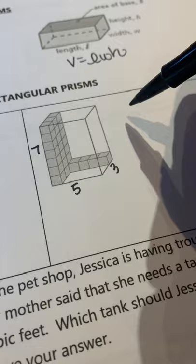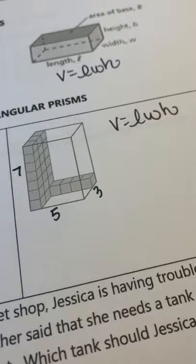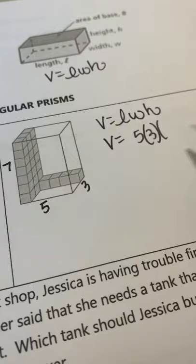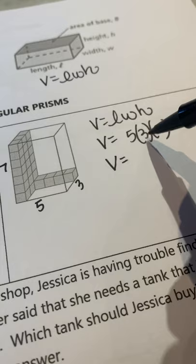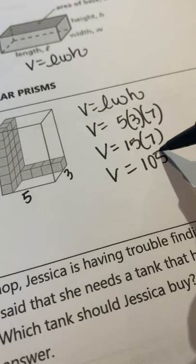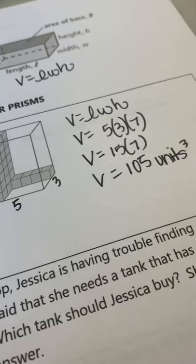Then go ahead and write your formula. Volume is length times width times height. And just put in your dimensions. 5 times 3 is 15. And 15 times 7 is 105 cubic units.